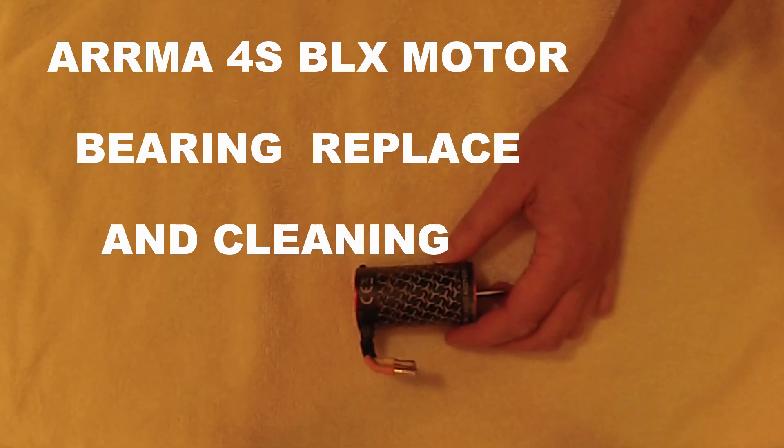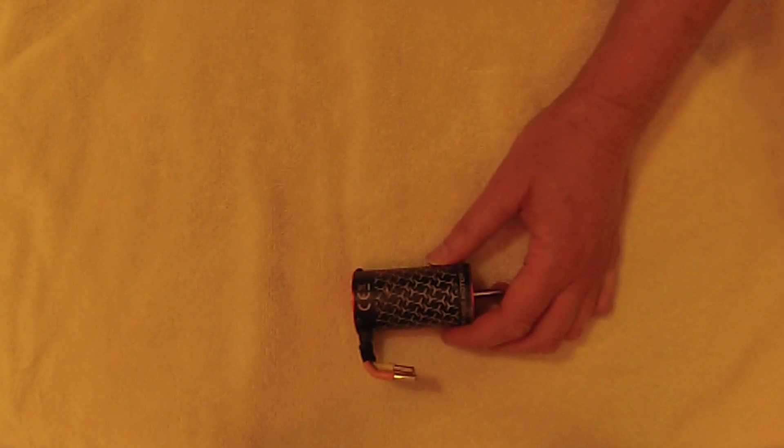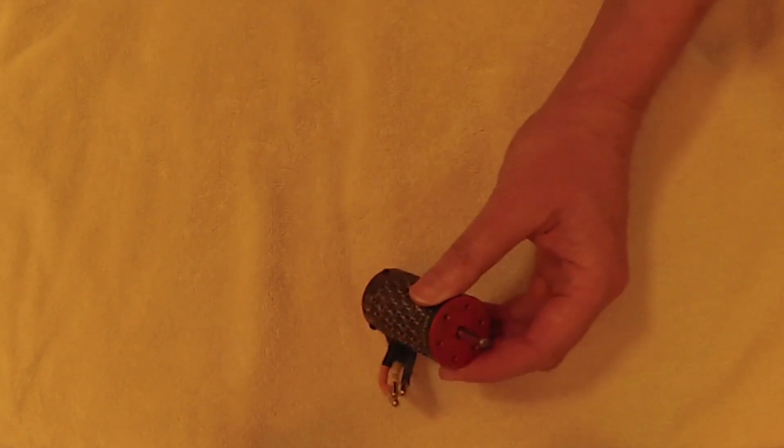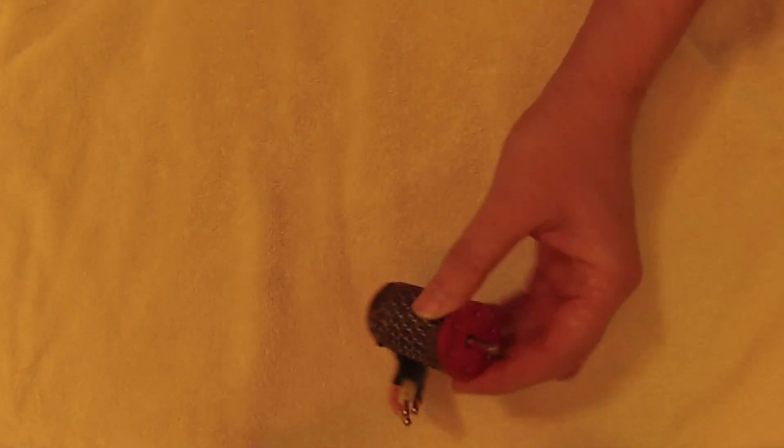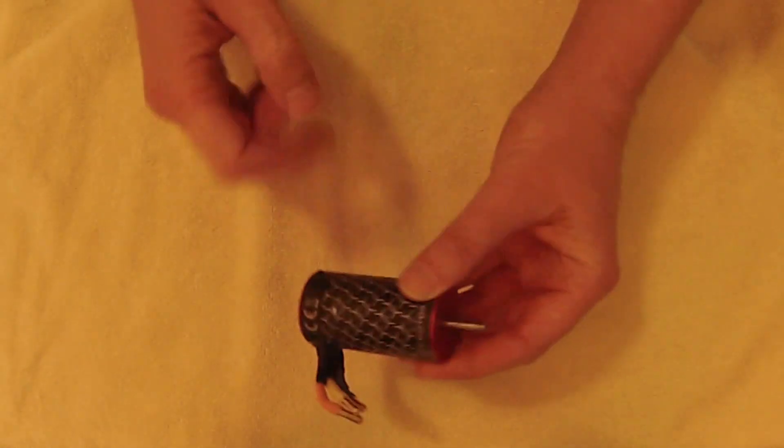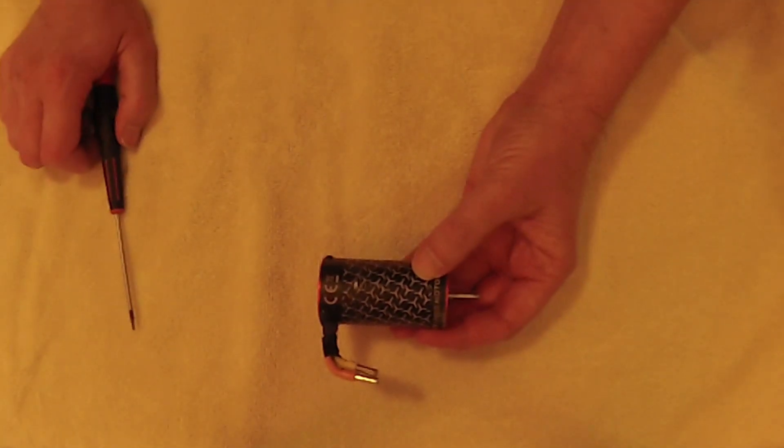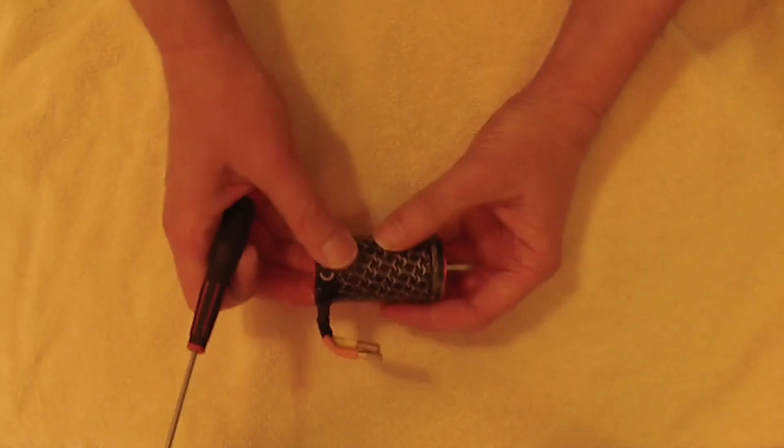Hey guys, Jim here from JCRC. Hope everybody's doing well. I'll show you how to take apart the motor and what I did to fix this thing. You're going to need to take your motor out and remove your pinion gear from the end. Just be careful you don't strip any threads while you're doing that.